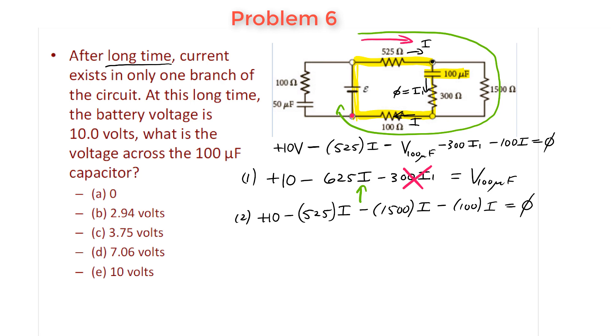So from this expression you get that the current I simply equals to 10 divided by these three resistors in series. If you add them up - 525 plus 1500 plus 100 - you should get 2125.